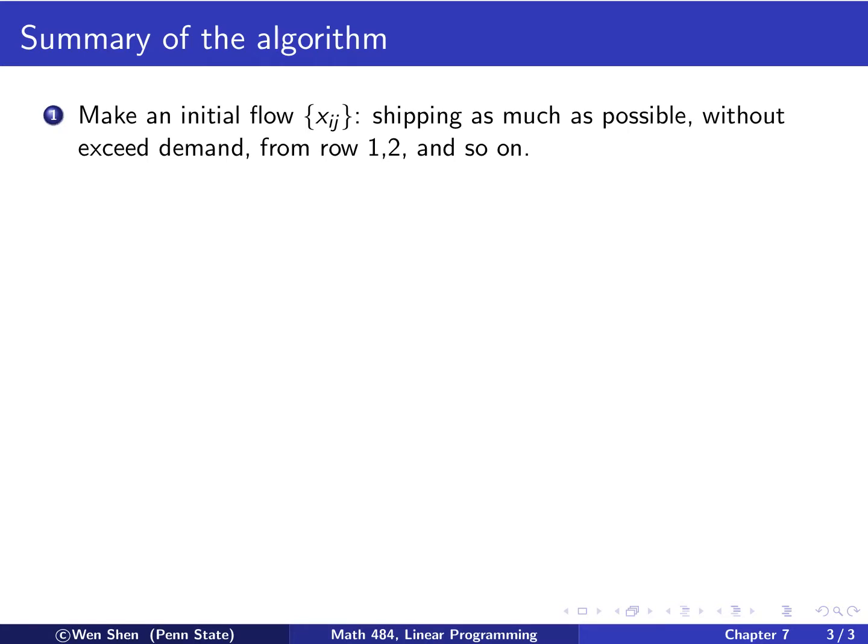So with all that discussion being made, for the first example, it's about time to give a summary of the algorithm. Let's summarize it. So how do you find a feasible solution? So, step one. From that table, we attempt to make an initial flow with the following strategy. Shipping as much as possible and without exceeding demand. And then we go through row one and then to row two and then to row three, each row at a time, and so on and so forth. And initial flow.